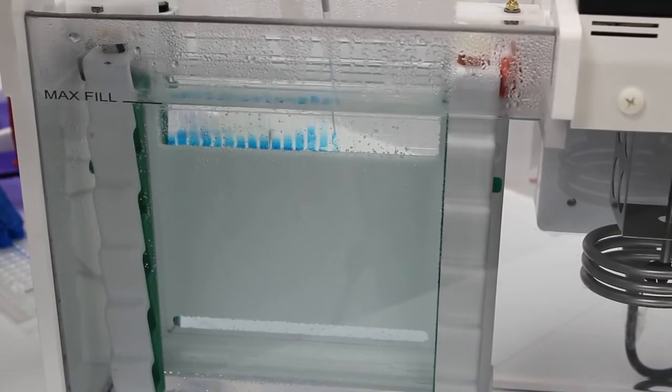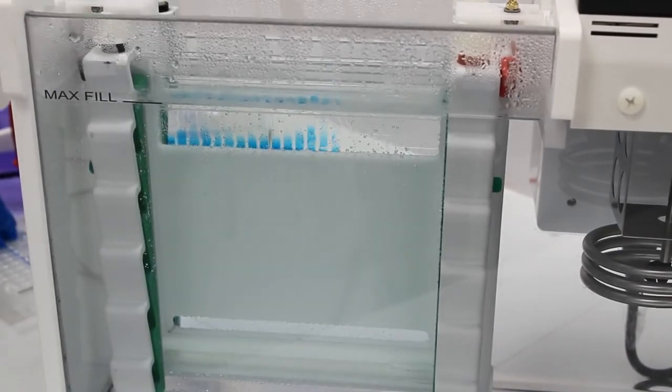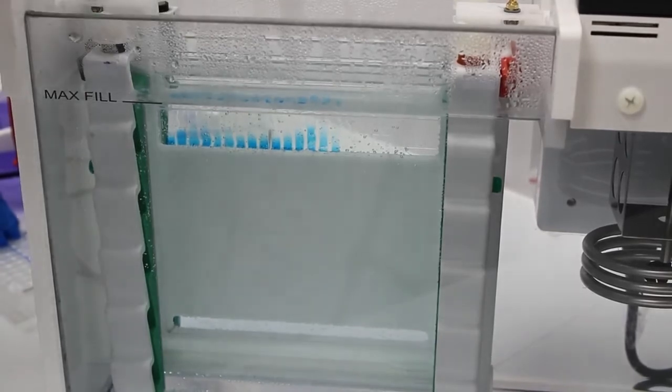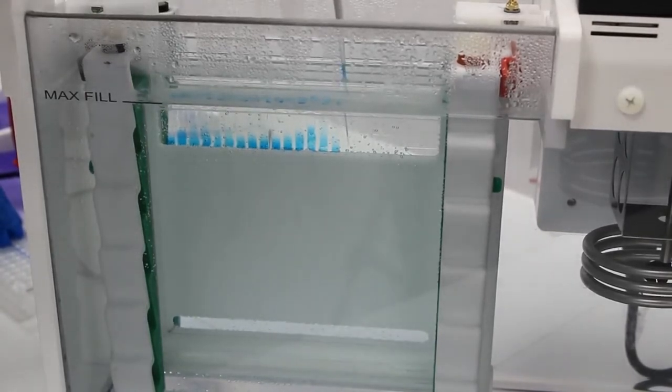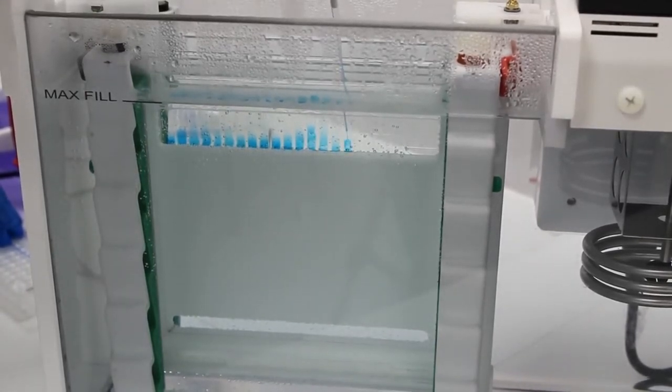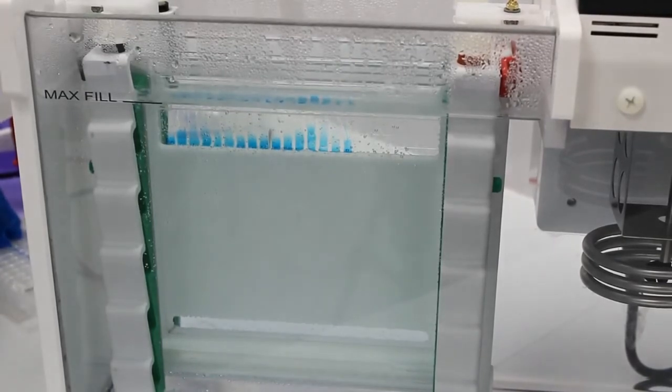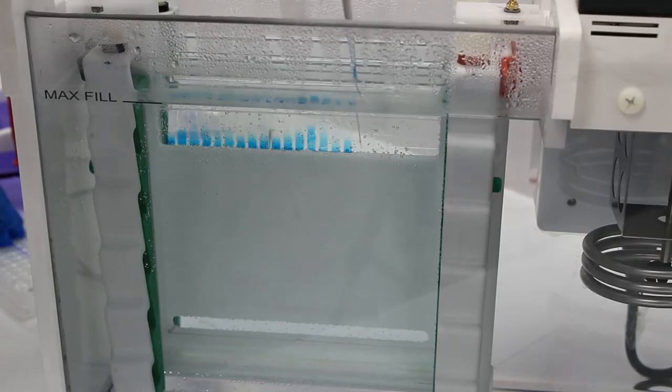So once you've finished loading all of the DNA on one side you can just carry on loading on the other side and then connect the lid back to the tank. Connect the cables from the lid to the power pack and then start the gel run.